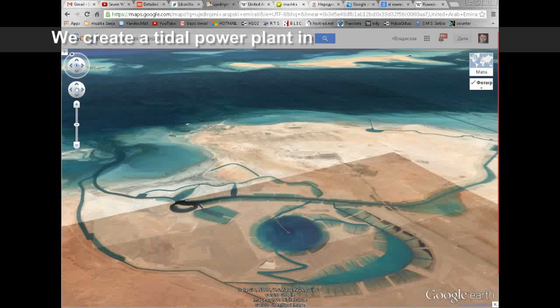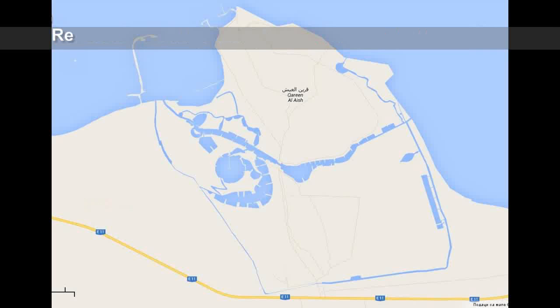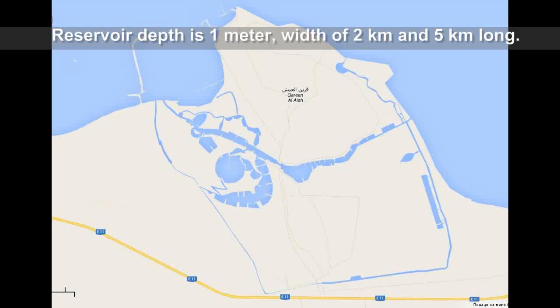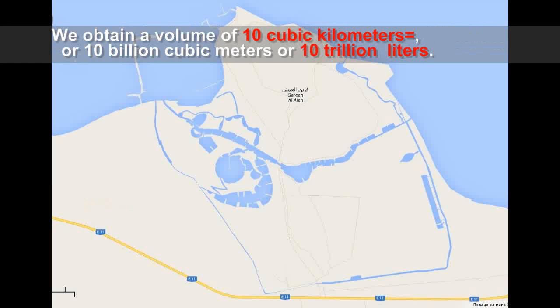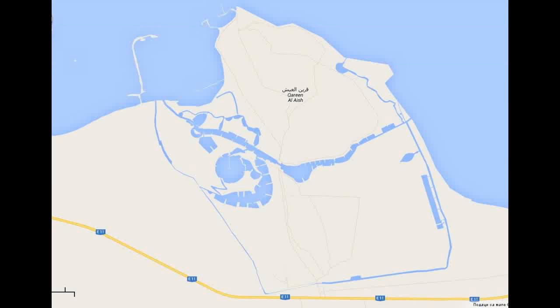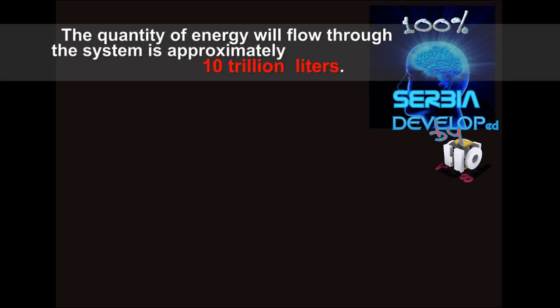We create a tidal power plant in Karina Lush. The reservoir depth is 1 meter, width of 2 kilometers, and 5 kilometers long. We obtain a volume of 10 cubic kilometers, or 10 billion cubic meters, or 10 trillion liters. The quantity of energy that will flow through the system is approximately 10 trillion liters.